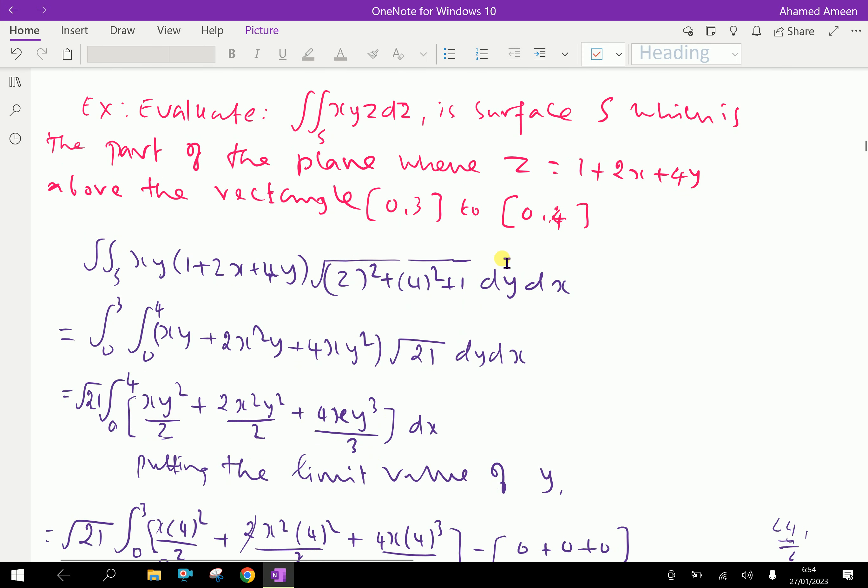Example: Evaluate double integral over S of xyz dS, where surface S is the part of the plane z = 1 + 2x + 4y above the rectangle [0,3] × [0,4].